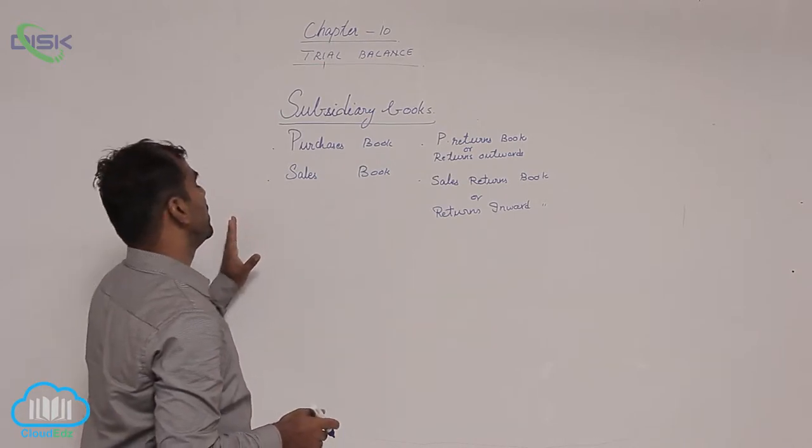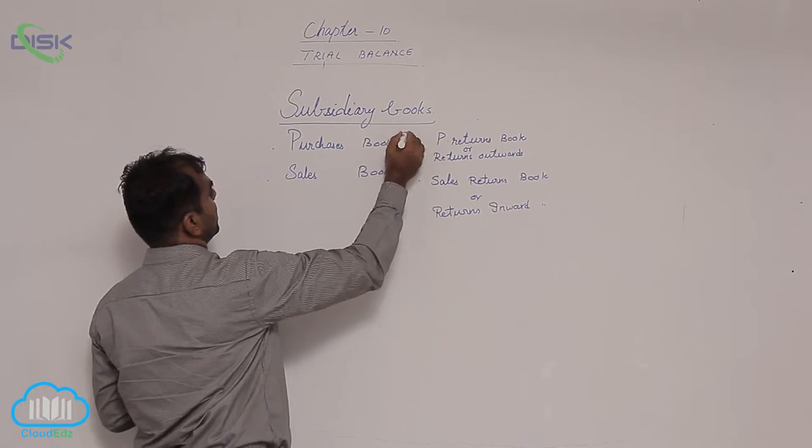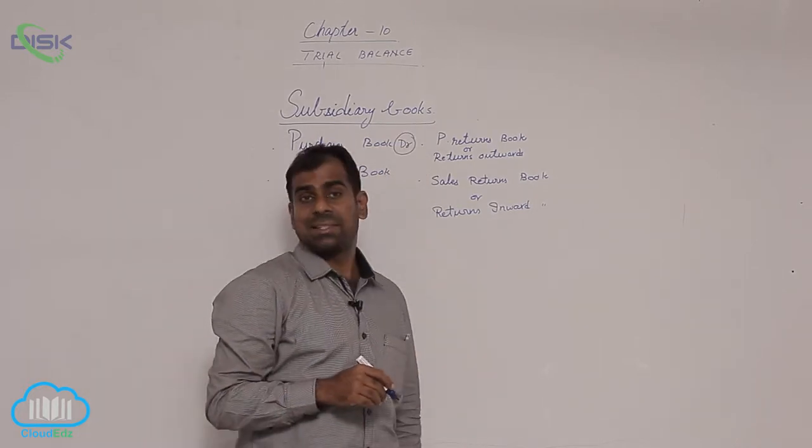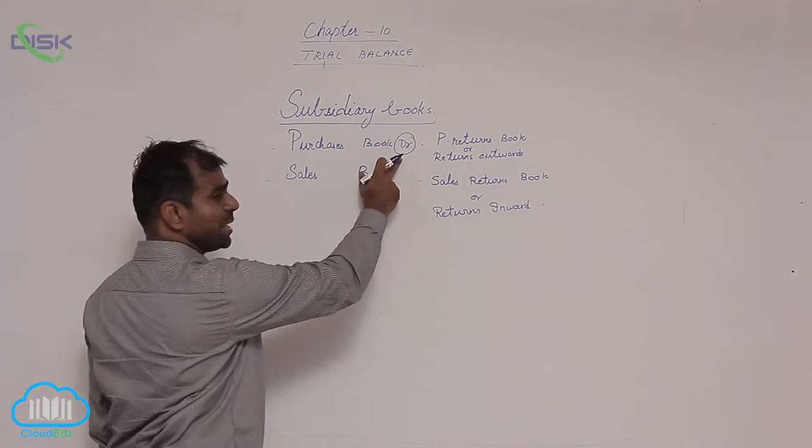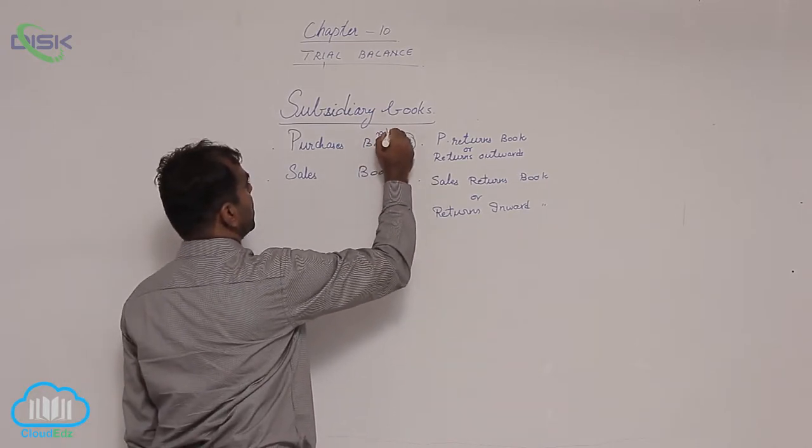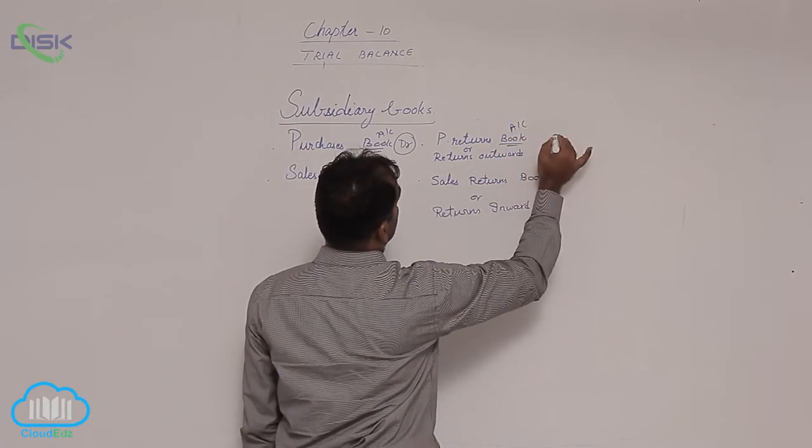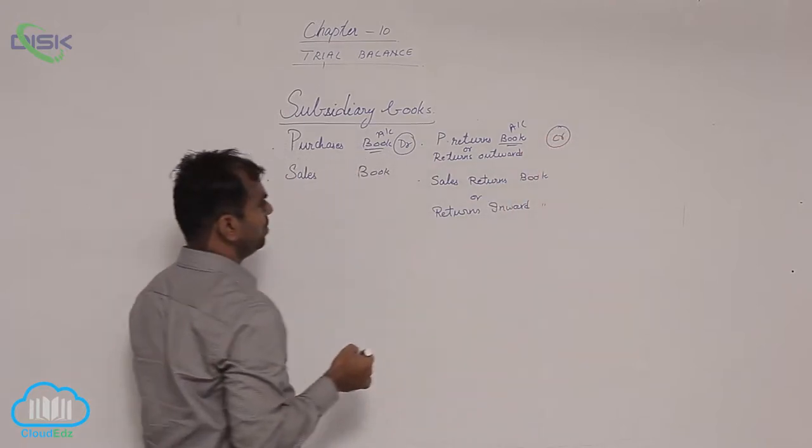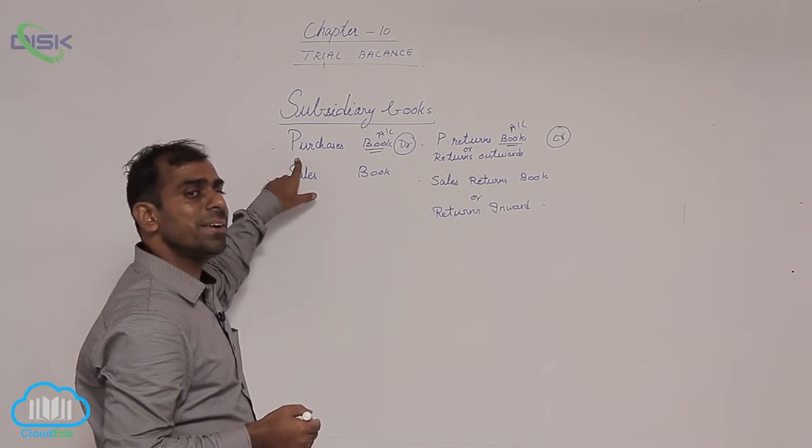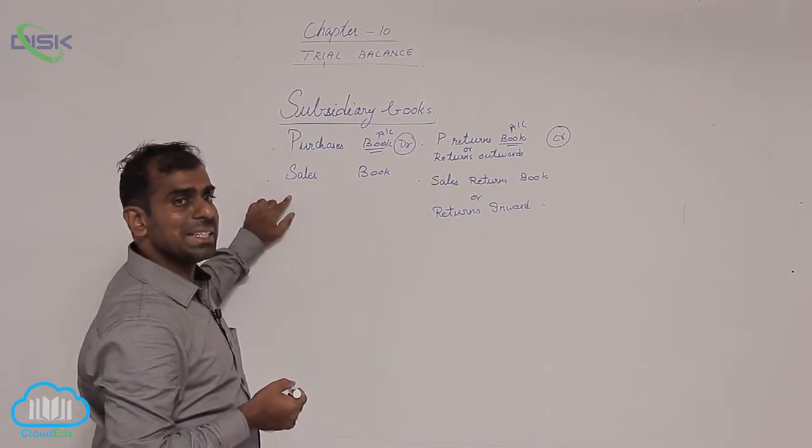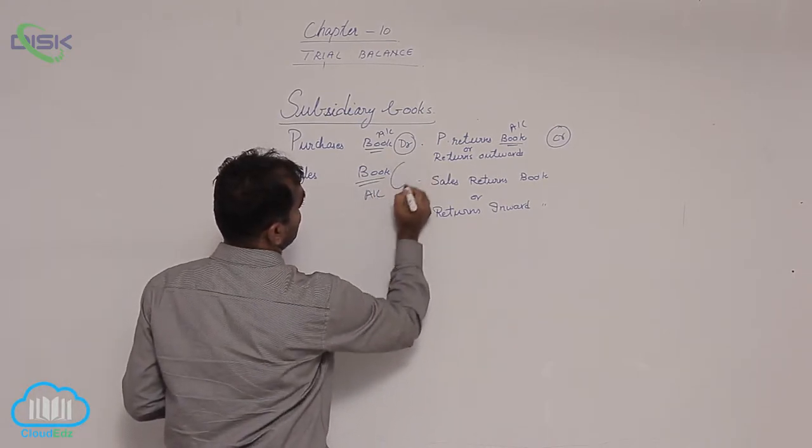If we take these four books, purchases shows debit balance because in journal entries you remember, we always say purchases account debit. Compare sales is opposite of purchases, or recall your journal entry, you always credited sales. So sales account always shows credit balance.